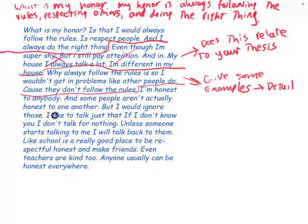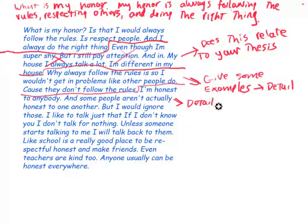'Because I'm honest to anybody and some people aren't actually honest to one another, but I would ignore those.' I think you're trying to prove that you always do the right thing, but the correlation here is a little weak. These are generalities — there are no details. You need to give specific details and examples of when this happened. You give the general statement but you don't give good details.